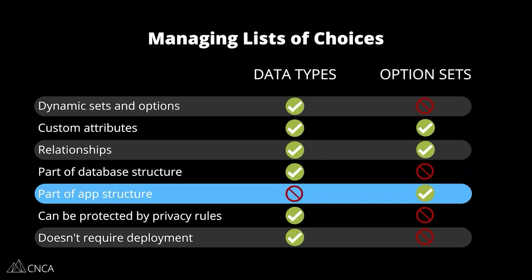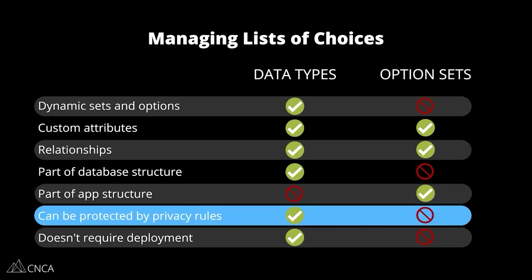Data types, indirectly, are also a part of your app structure — they belong to your database, which is an element of your application. But we do want to see these differences here because they lead to different ways of using and protecting the content around them.